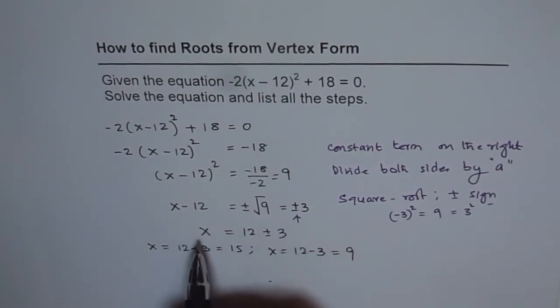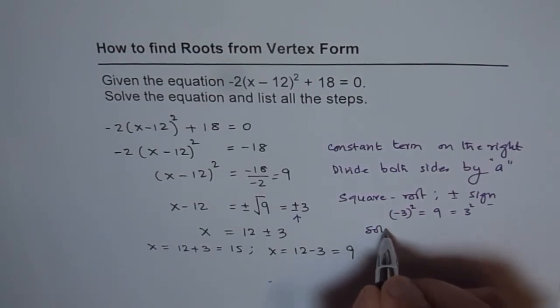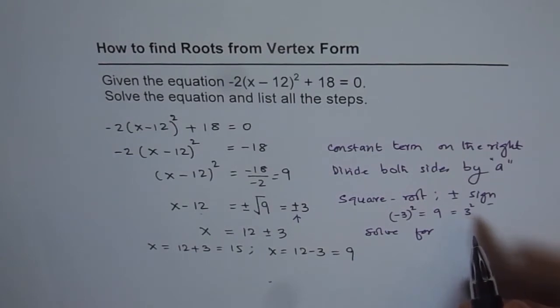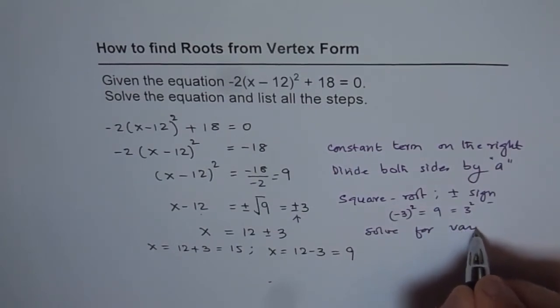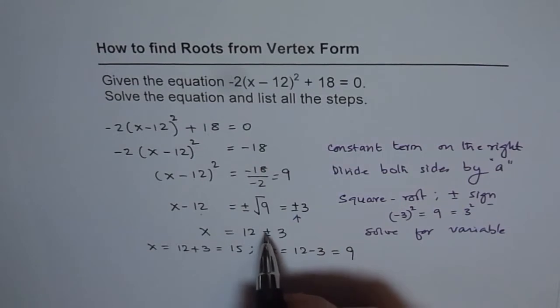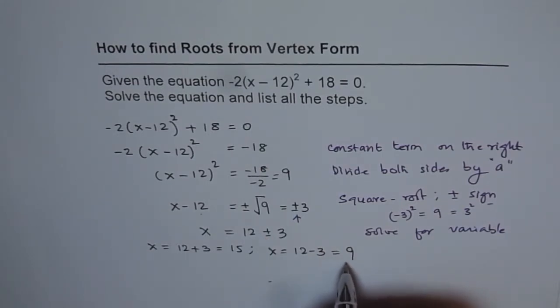Once you do that, it is a matter of solving for x. Solve for x by adding or subtracting the constant term left within the bracket, and get all the solutions. Remember, it is plus and minus, so you expect two solutions.